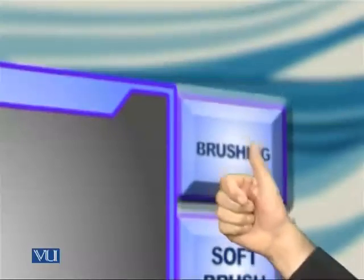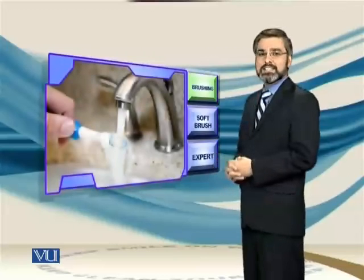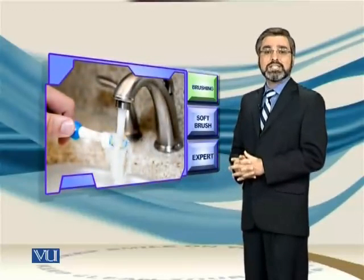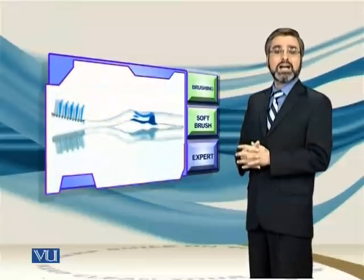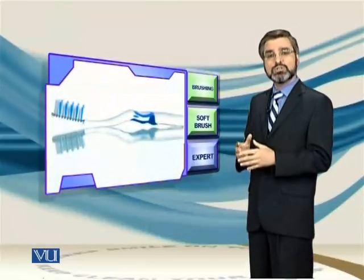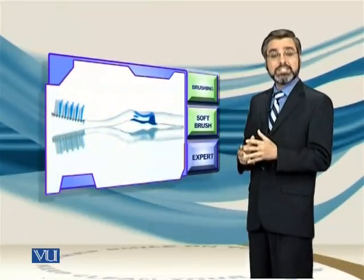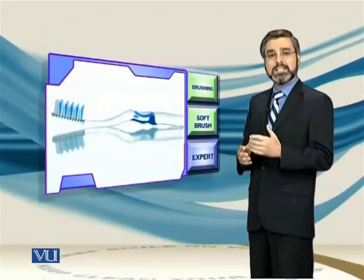ناظرین sensitivity سے بچنے کے لیے چند simple precautions ہیں جن کو اپنا کے ہم اس سے بچ سکتے ہیں۔ سب سے پہلی precaution brushing سے related ہے۔ اگر proper brushing ہوگی تو outer layer enamel preserve رہے گا، dentine expose نہیں ہوگی، cavity نہیں ہوگی اور ہمیں sensitivity نہیں ہوگی۔ دوسری precaution ہے hard brush کا استعمال نہ کرنا کیونکہ hard brush کے استعمال سے outer layer enamel erode ہوتی ہے اور sensitive dentine expose ہو جاتی ہے۔ اسی طرح hard brush کے استعمال سے gums root کی طرف migrate کرنا شروع کر جاتے ہیں اور root کا sensitive portion expose ہو جاتا ہے۔